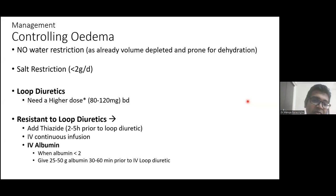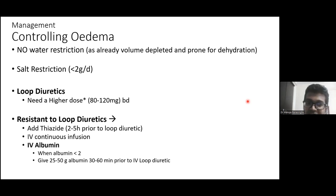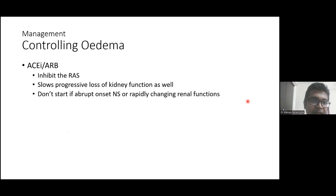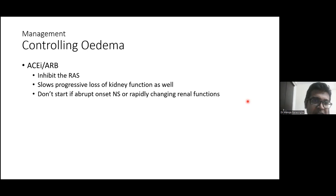If the patient remains resistant to all diuretic regimens, IV albumin should be considered, especially in hypoalbuminemic patients. Since loop diuretics require protein binding for delivery, administering IV albumin prior to the loop diuretic will maximize its diuretic effect. ACE inhibitors or ARBs also help control edema by inhibiting the renin-angiotensin-aldosterone system and additionally slow the progression of kidney disease.